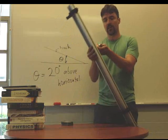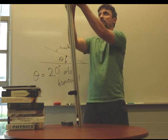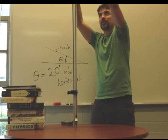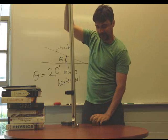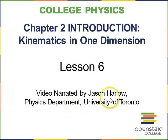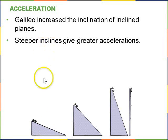And if I was to raise the angle all the way up to 90 degrees and drop them, it turns out that they drop together and they drop at 9.8 meters per second squared. So Galileo did these experiments with rolling marbles down inclines, and he increased the inclination of the inclined planes and found that steeper inclines give greater accelerations.